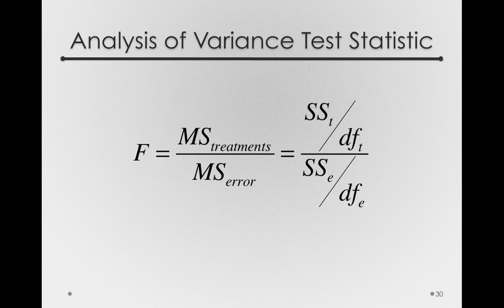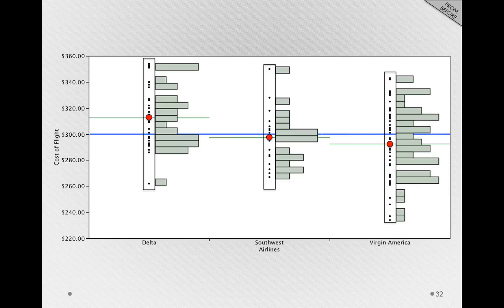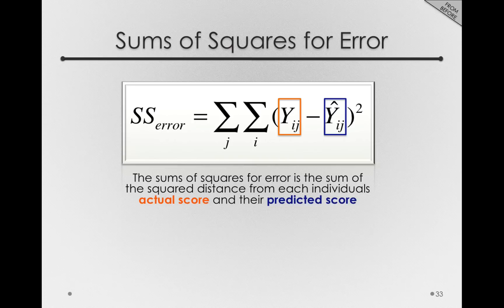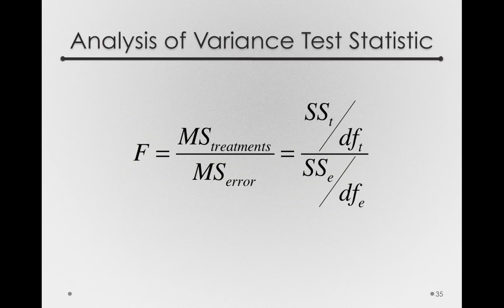The mean square for error is the sums of squares for error divided by the degrees of freedom for error. The sums of squares for error is the deviations between the actual scores for individuals — the Y_ij's — minus the predicted scores, squared, summed using double summation over every observation in every group, for all i's and all j's. This is simply how much individuals spread out around their own group means — that's our baseline for error. In an analysis of variance model, we also call this the sums of squares within, where 'within' refers to within a group. The mean square for error — SS_error divided by its degrees of freedom — is the denominator of our analysis of variance.